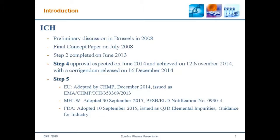For ICH, there were some preliminary discussions in Brussels in 2008 with a final concept paper on July 2008. The step two was completed on June 2013, with a step four approval expected on June 2014 and achieved on November 12, 2014, with a corrigendum released on December 16, 2014. And finally, the step five: in Europe adopted by CHMP December 2014, MHLW adopted September the 30th, 2015, and FDA adopted September the 10th, 2015.